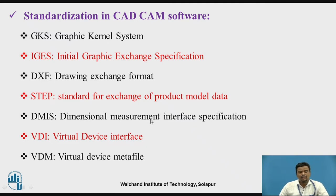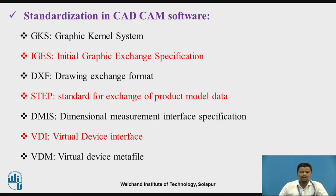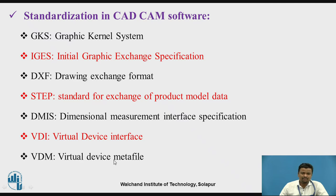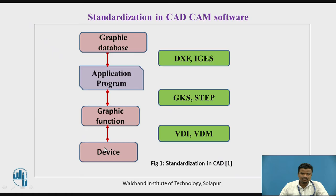DMIS is used when you want to measure dimensions, limits, fits, and tolerances — that is, geometrical dimensions and tolerances. Whether you have a 2D model, a 3D model, or a physical product and want to measure something, DMIS is very helpful as part of the data exchange format. After that, there is the Virtual Device Interface (VDI) and the Virtual Device Metafile (VDM), where the virtual device metafile is a part of the virtual device interface.